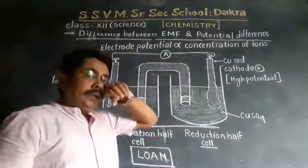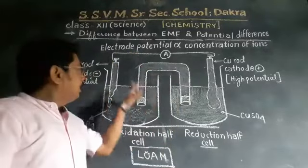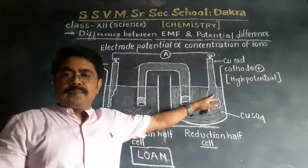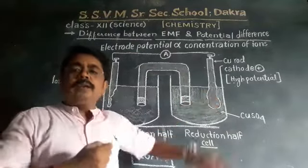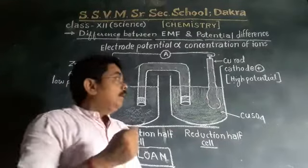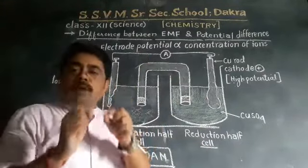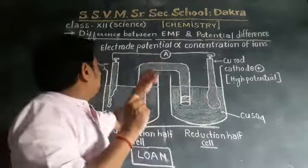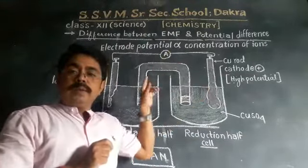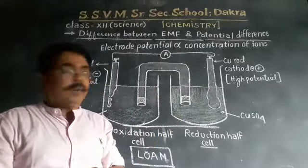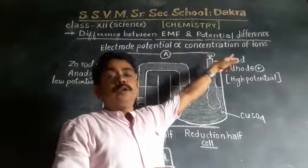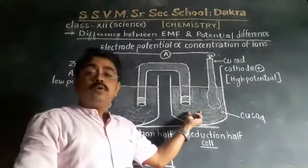As we have seen in our previous lecture, in both electrodes some potential develops. That potential is called electrode potential. The most important thing is that the electrode potential of any electrode directly depends upon the concentration of ions in the solution.